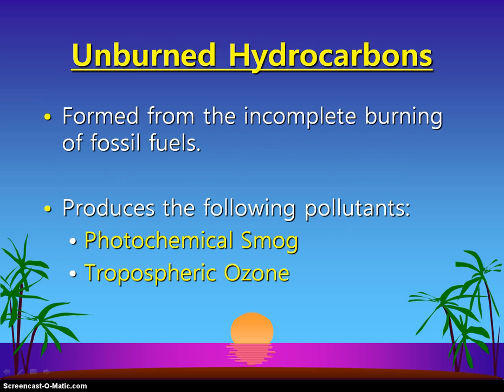Hydrocarbons also come from the incomplete burning of fossil fuels, usually coal and petroleum or oil. They produce things like smog, especially in cities with a lot of cars or heavy industry, and also tropospheric ozone — the ozone that forms close to us that we breathe in, not the one in the stratosphere. This pollutant version forms down in the troposphere and can cause asthmatic-type symptoms and respiratory problems.